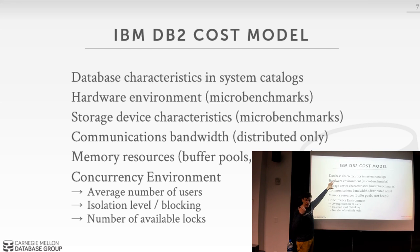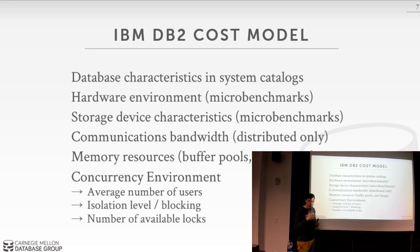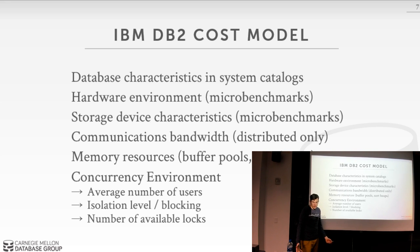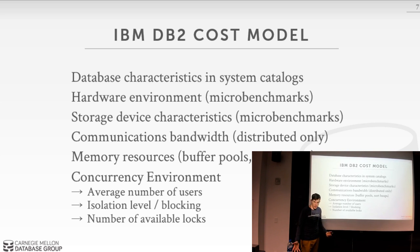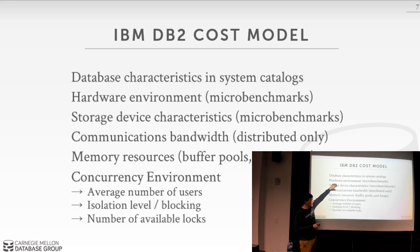Bogomips — 'bogus millions of instructions per second' — is a Linux micro benchmark that runs at boot to estimate CPU speed. You can see it in /proc/cpuinfo along with cache sizes and clock speed. Linux uses this to make decisions about scheduling and interrupt handlers. It's the same concept: a quick-and-dirty way to approximate hardware capabilities, which DB2 uses as a weighting factor in its cost estimations.